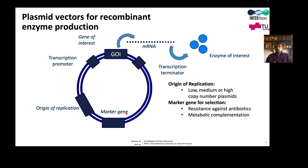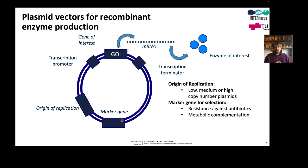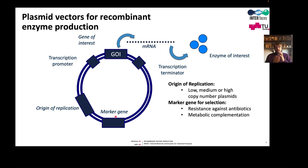This has a drawback because we need to add the antibiotic, and there are applications where the addition of antibiotics is problematic, for instance if you want to use a protein for food application. There, metabolic complementation is used. In metabolic complementation, the cell is missing the gene for the biosynthesis of an important metabolite, such as methionine. When the cell is grown on minimal medium that does not contain methionine, it cannot grow. The marker gene is precisely the gene which was inactivated in the genome, and the plasmid complements this biosynthetic pathway, so cells having the plasmid can grow without adding antibiotics.